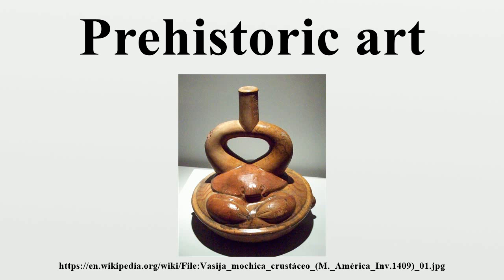The oldest undisputed works of figurative art were found in the Schwäbische Alb, Baden-Württemberg, Germany. The earliest of these, the Venus figurine known as the Venus of Hohle Fels and the Löwenmensch figurine, date to some 40,000 years ago. Further depictional art from the Upper Paleolithic period includes cave painting and portable art, Venus figurines like the Venus of Willendorf, as well as animal carvings like the swimming reindeer, the Wolverine pendant of Les Isis, and several of the objects known as Batons de Commandement.